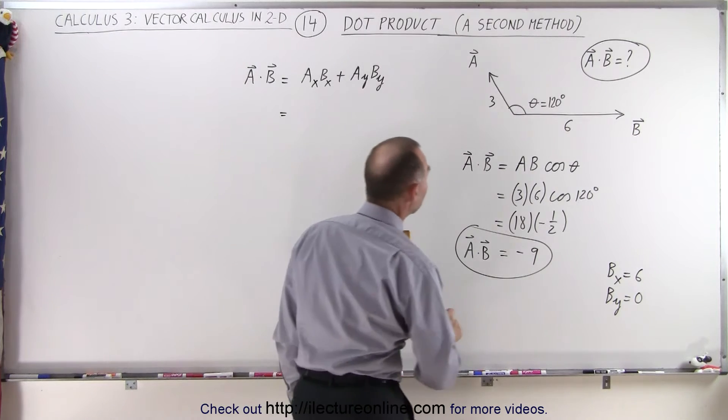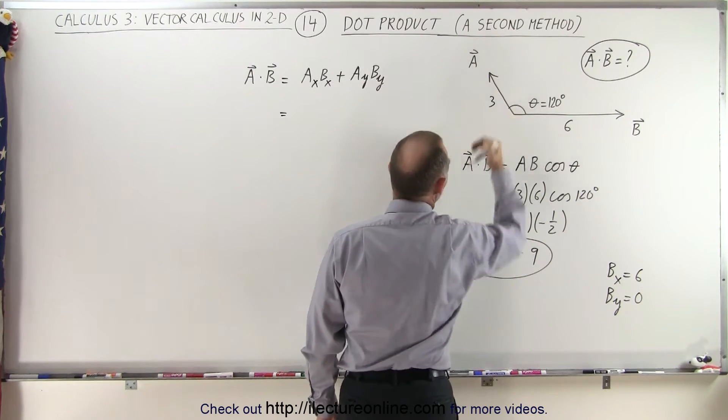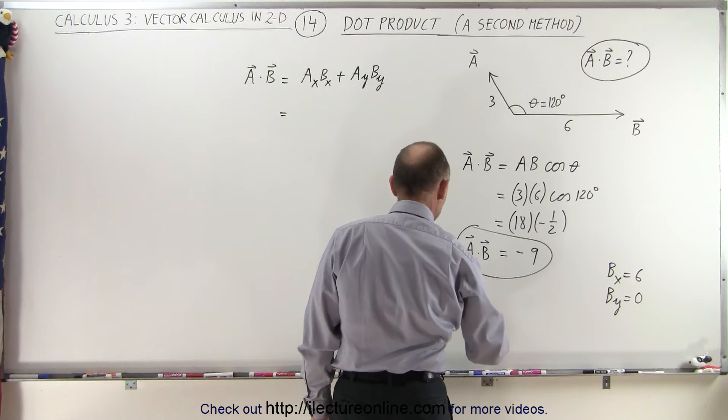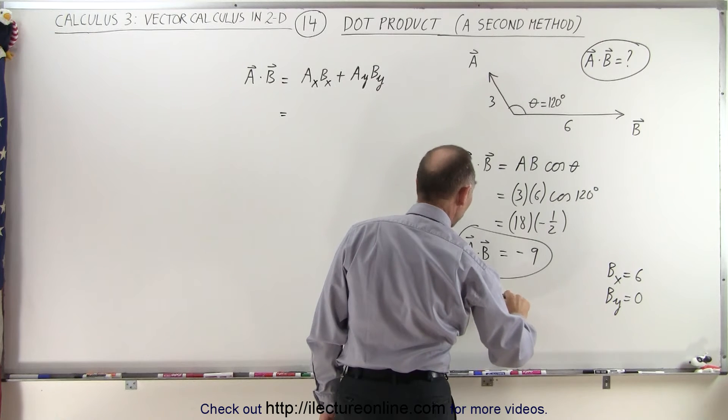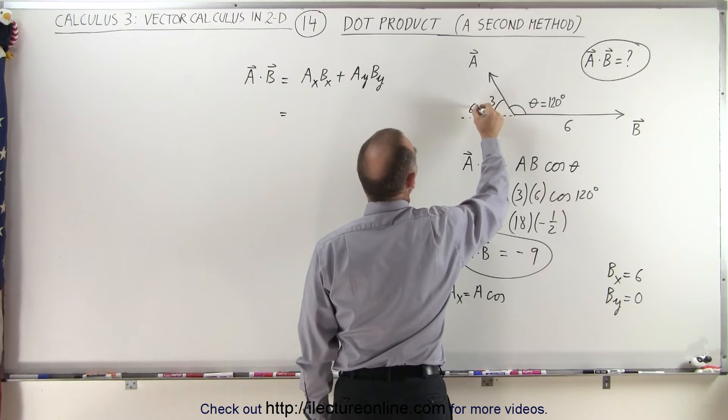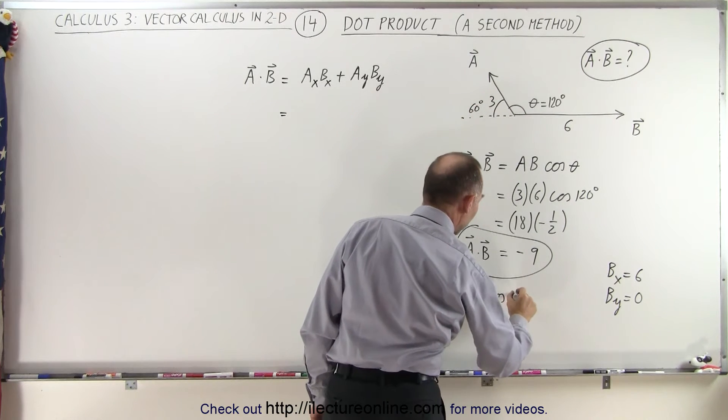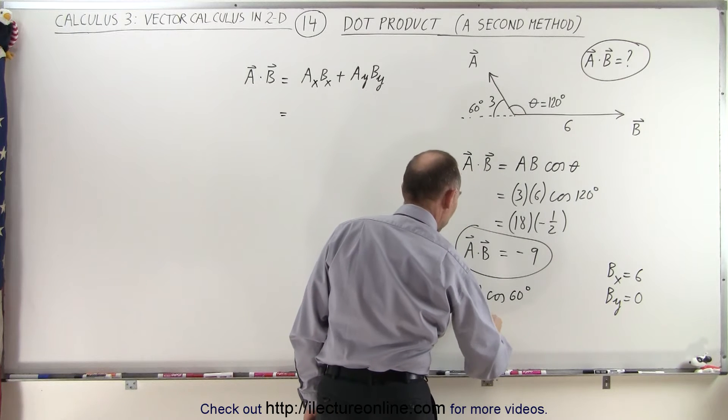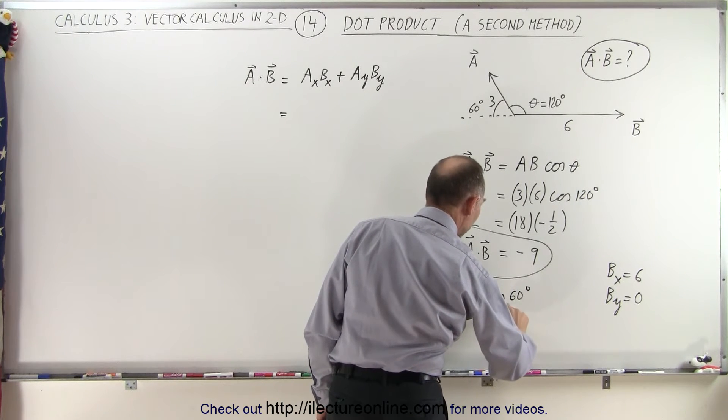What about the A vector? Well, in the case of the A vector, the X component is going to be pointing to the left. So the magnitude of that, A_x, would be equal to the magnitude A times the cosine of—and if we take a look at this angle, this would be an angle of 60 degrees, because 60 plus 120 gives us 180—so the cosine of 60 degrees, which is equal to 3 times the cosine of 60, which is 1/2, which is 1.5.